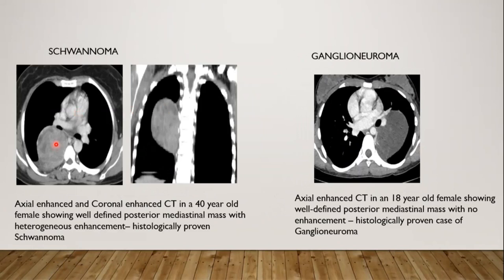Schwannomas are the most common nerve sheath tumors. On contrast-enhanced CT, they appear as heterogeneously enhancing lesions in the paraspinal region. The heterogeneous enhancement is because of the cystic and hemorrhagic areas within. Ganglioneuroma is more common in children older than 10 years, and on contrast-enhanced CT, we can see an elongated lesion in the posterior mediastinum with only slight to moderate enhancement.